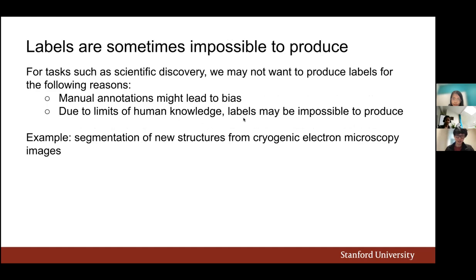For tasks like scientific discovery, we may not want to produce labels at all for two reasons. First, it might introduce bias — if we're trying to segment an unknown structure, we might impose our own assumptions about what it looks like. Second, if we don't know much about the structure, we may not even know the extent of the object. For example, collaborators in our lab are working to segment structures not well understood from cryogenic electron microscopy images.